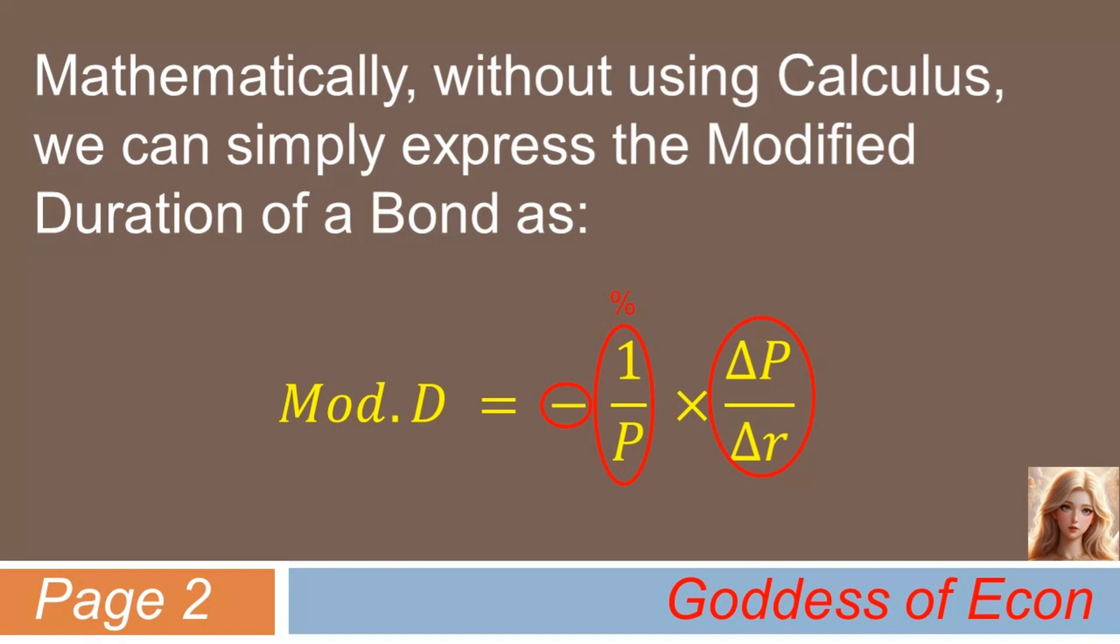Again, the minus sign is there to simply make the duration a positive number. That's pretty much it. Well, still not getting it? You are a mathphobe? Again, don't worry. You will get it if you study the next slides with me. So, keep on following me.